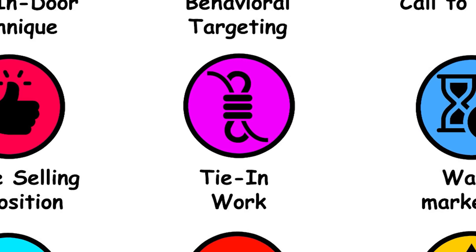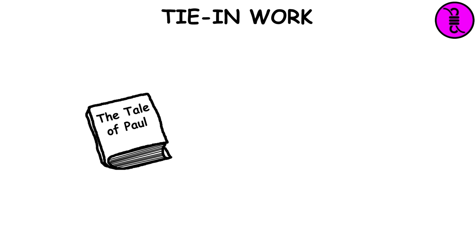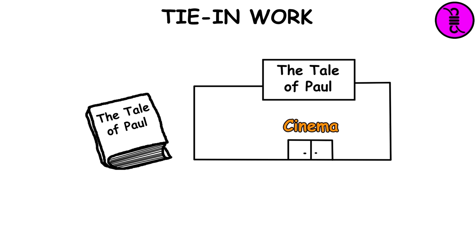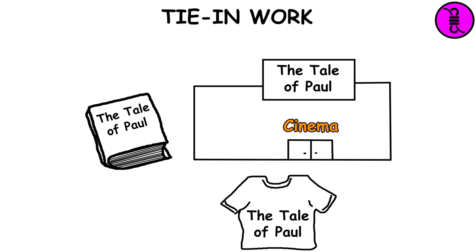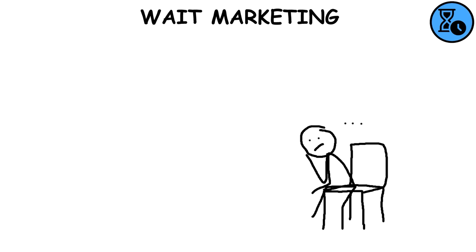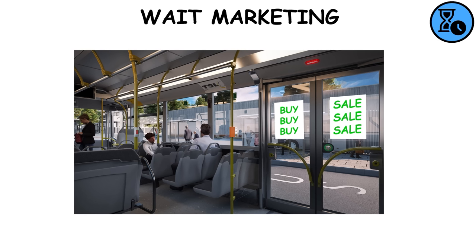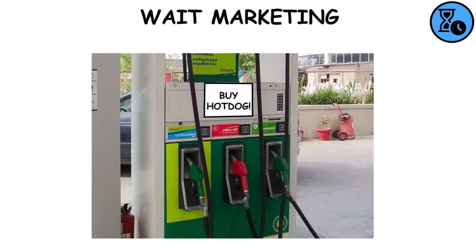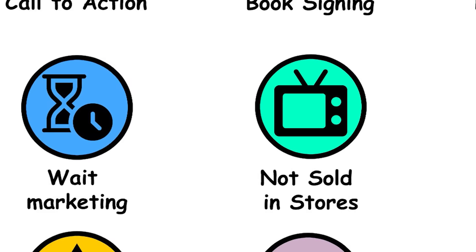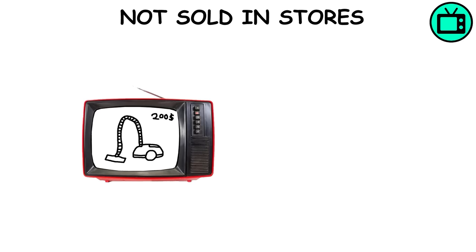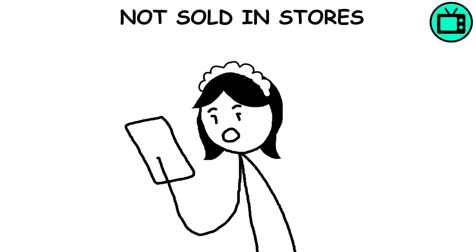Tie In Work: Creating fiction or products based on existing media for promotion and profit, often authorized by the original creators. Weight Marketing: Delivering promotional messages to consumers during periods of waiting, such as posters on buses and video clips at fuel pumps. Not sold in stores: Goods advertised on TV or online and purchased directly from the supplier, emphasizing their novelty.